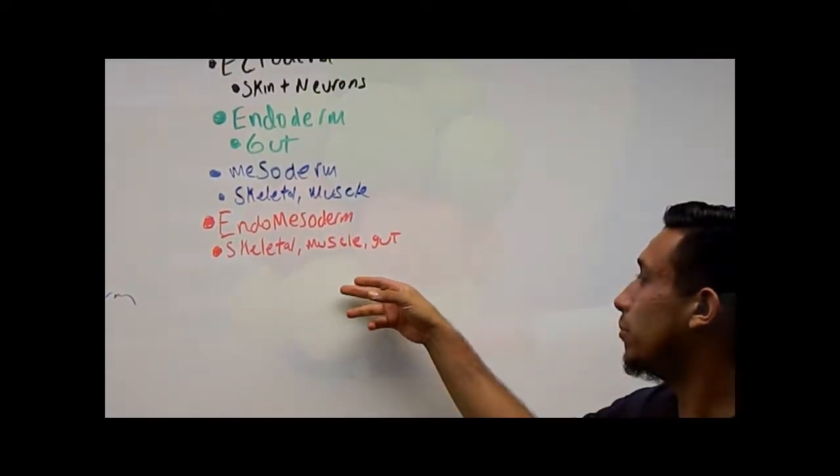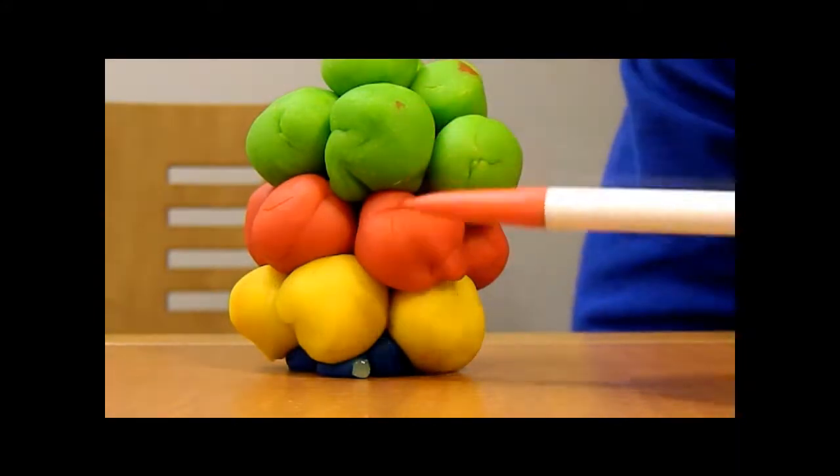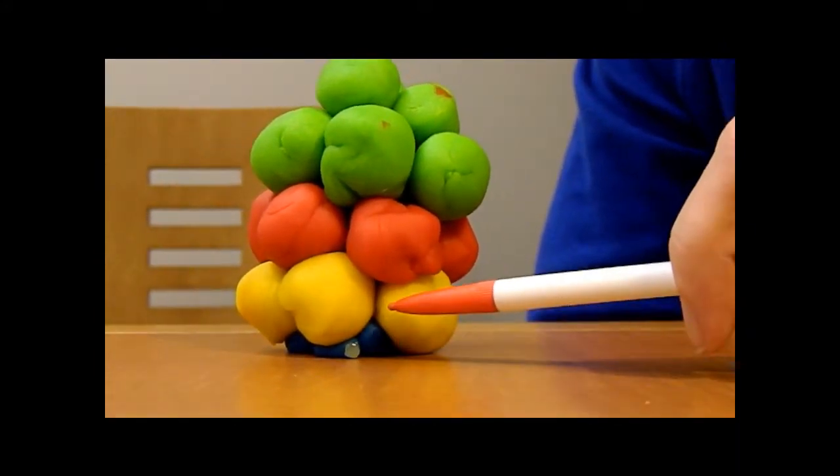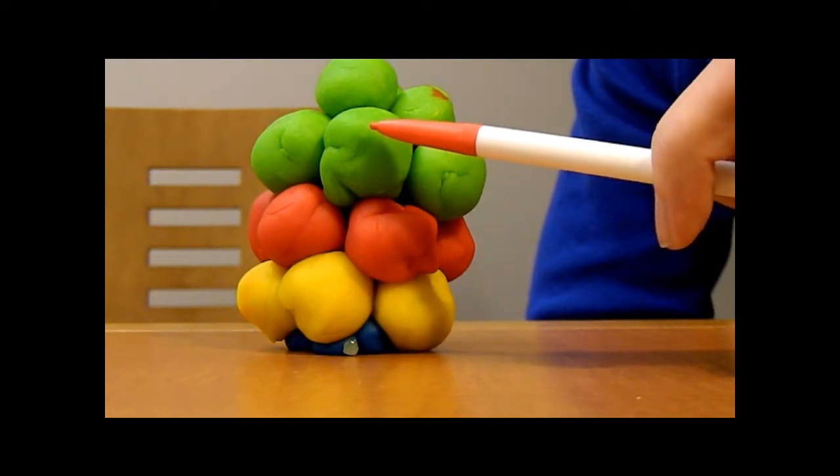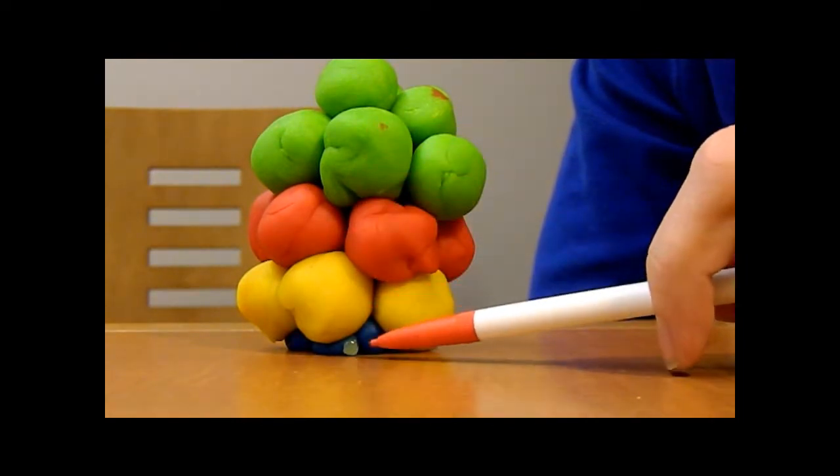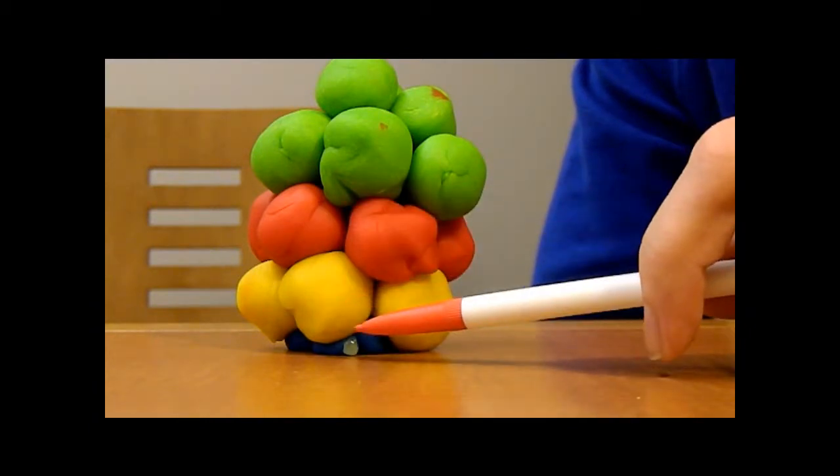Here we have a 64-cell stage blastula of a sea urchin. We have micromeres, veg2, veg1, and mesomeres. The mesomeres are the animal pole. Veg1, veg2, and the micromeres, this is our vegetal pole.